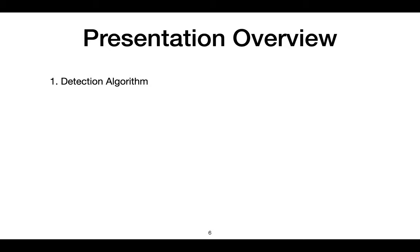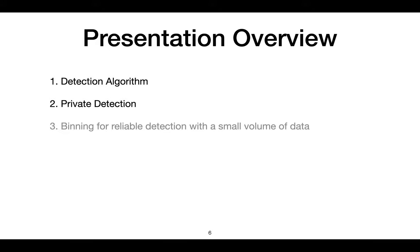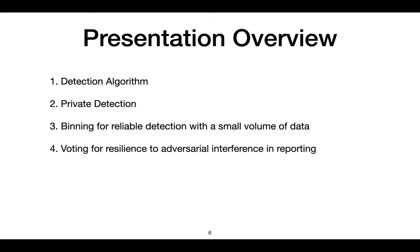In the remainder of this presentation, I will first discuss our basic algorithm and provide a result demonstrating that a small data size suffices for detection. I will then discuss how to perform this detection in a privacy-preserving manner, and outline how a binning mechanism can be used to provide reliable detection even with relatively small data volumes. I will then describe an extension which increases resilience to adversarial reporting via voting. Finally, I will discuss practical aspects including computational and communication overhead, and experimental results demonstrating its performance.